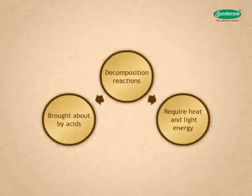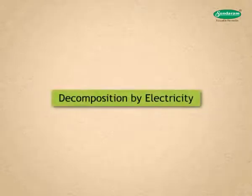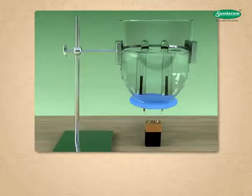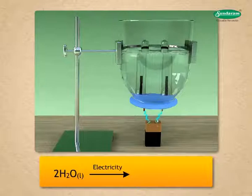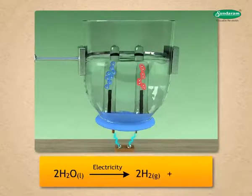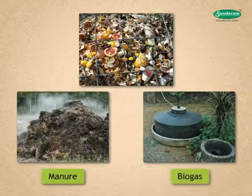You must have realized that decomposition reactions require heat and light energy. Some decomposition reactions are brought about by acids. Let us see how decomposition is carried out by electricity. Will it be possible to decompose water by heat or light energy? If you pass current from a 6-volt battery, is decomposition of water possible? When current is passed through acidified water, it decomposes to give hydrogen gas and oxygen gas. We come across various decomposition reactions in nature around us. The organic wastes are decomposed to manure and biogas, which is used as fuel.